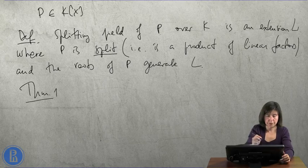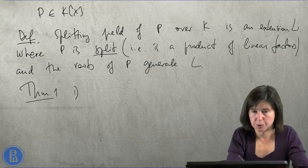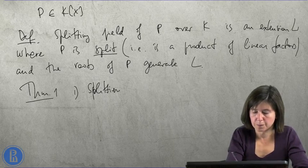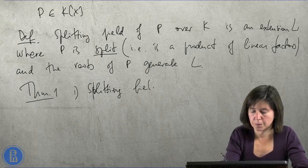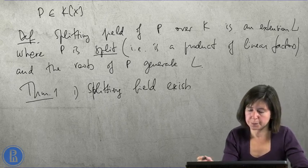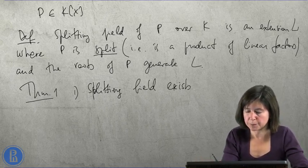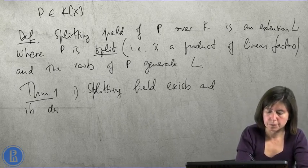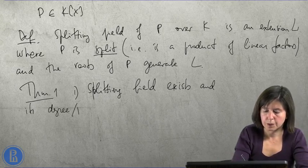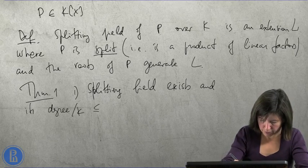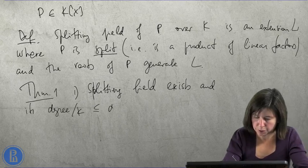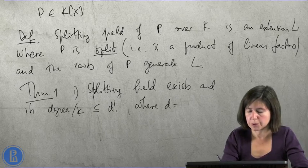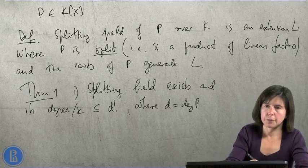Theorem 1: A splitting field exists, and its degree over k is less than or equal to d factorial,